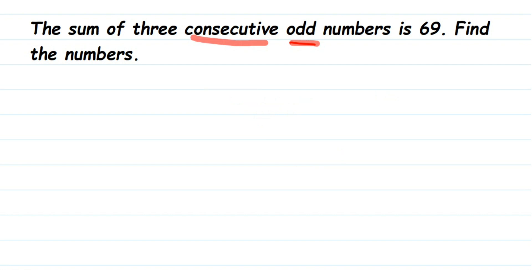The question is: which three consecutive odd numbers must we add so that the sum is 69? We have to find those three numbers. Since we don't know the numbers, we need to assume a variable. Just for example, consider 1, 3, and 5 as three consecutive odd numbers. I don't know my first number, so whenever you have to find unknown numbers, you assume a variable. Here I'm going to assume my first odd number is x.